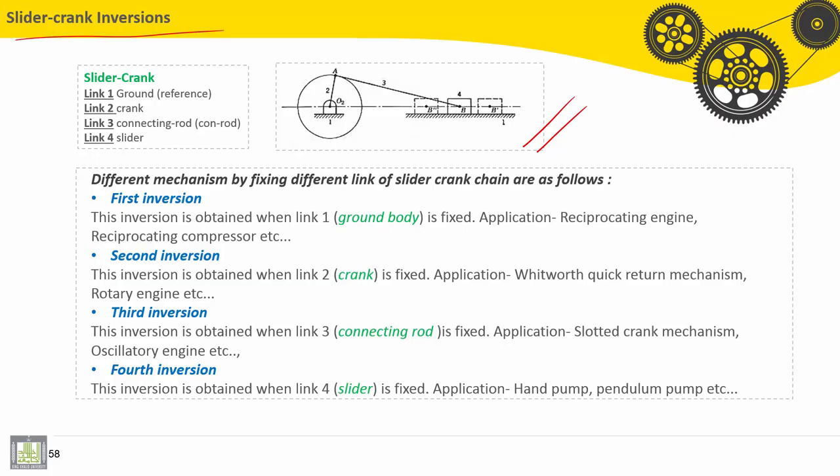Here we have the slider crank. Link number one is called the ground. Link number two is the crank. Link number three is the connecting rod, and number four is the slider.